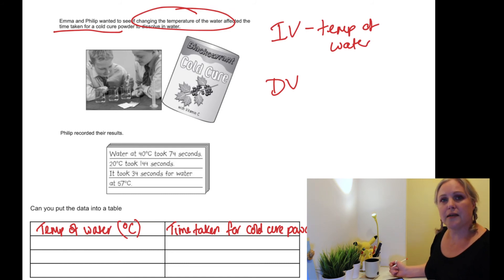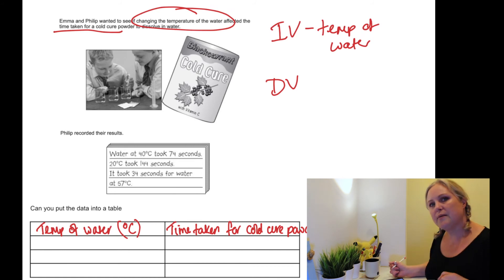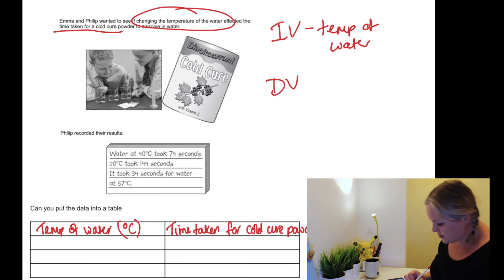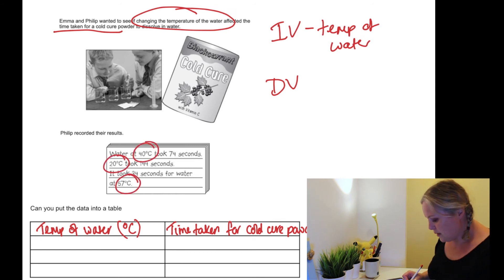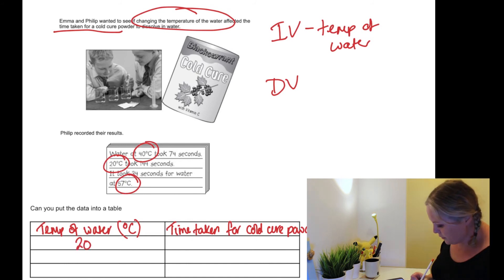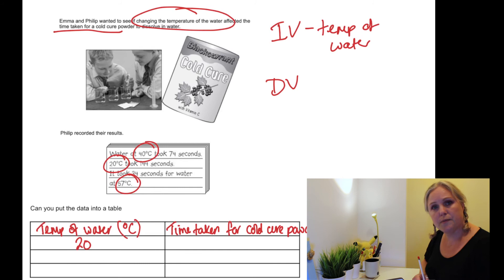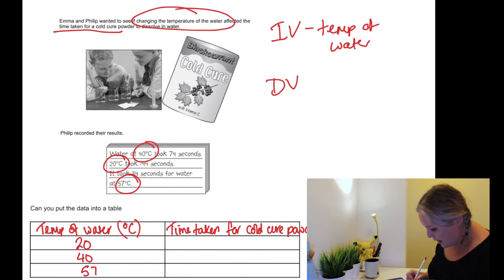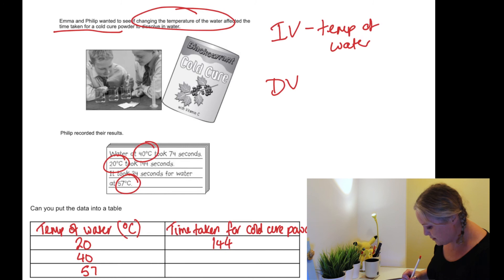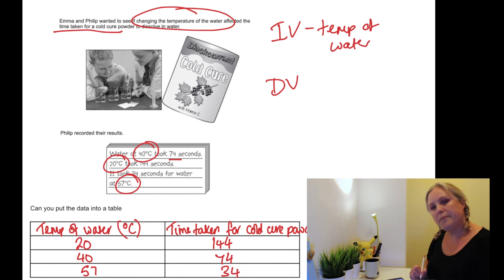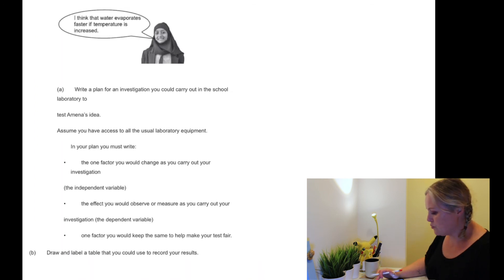Now we need to put the data in order — either starting at the highest or lowest temperature, it needs to be in a sensible order. Starting at the lowest: 20 degrees Celsius, then 40, then 57. Notice I don't need to write the degree Celsius symbol each time because that's at the top. At 20 it took 144 seconds, at 40 it took 74 seconds, and at 57 it took 34 seconds. That is much clearer data that we're able to interpret.